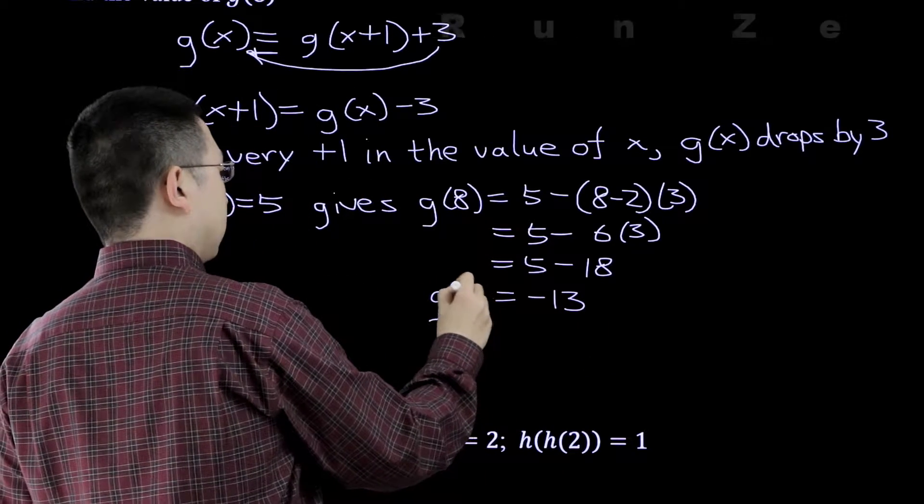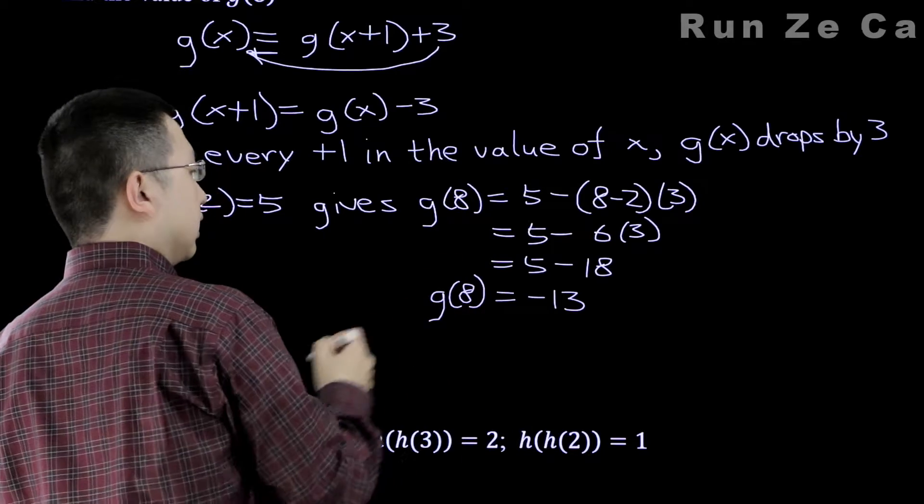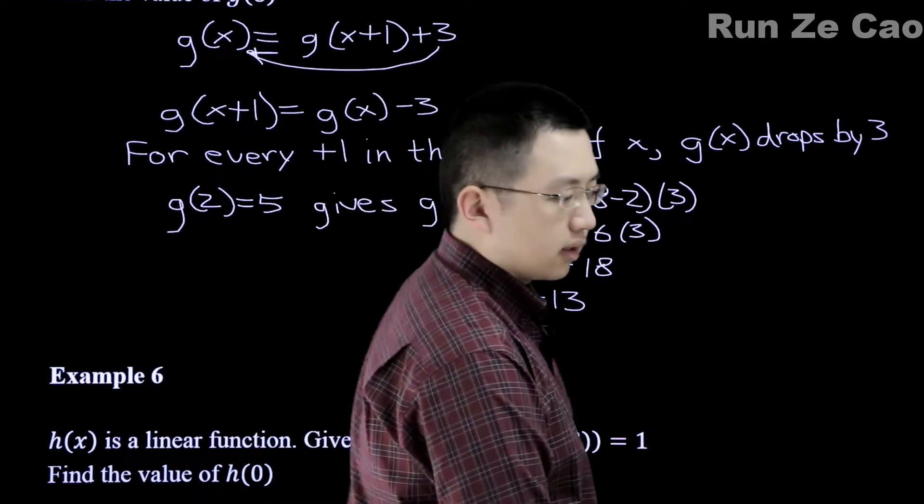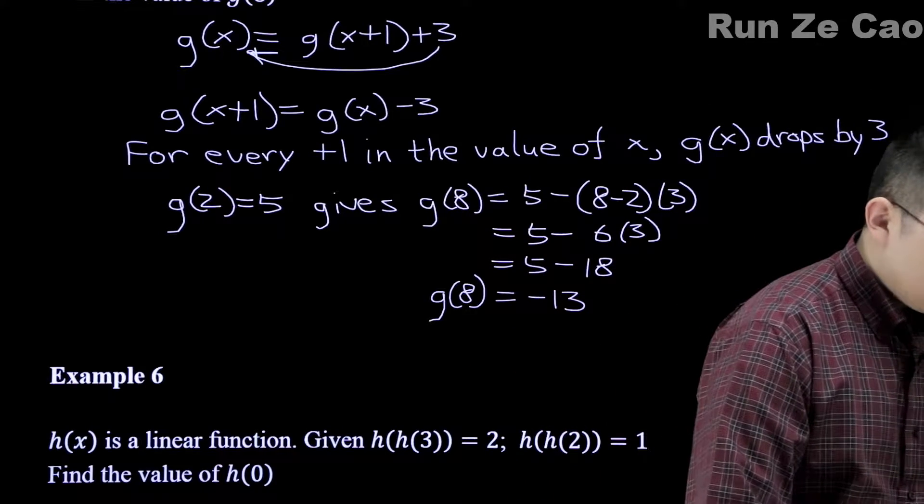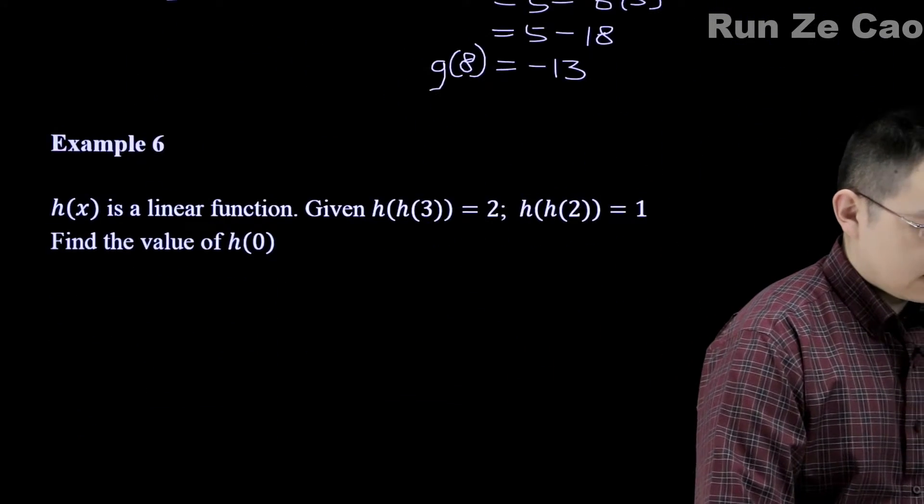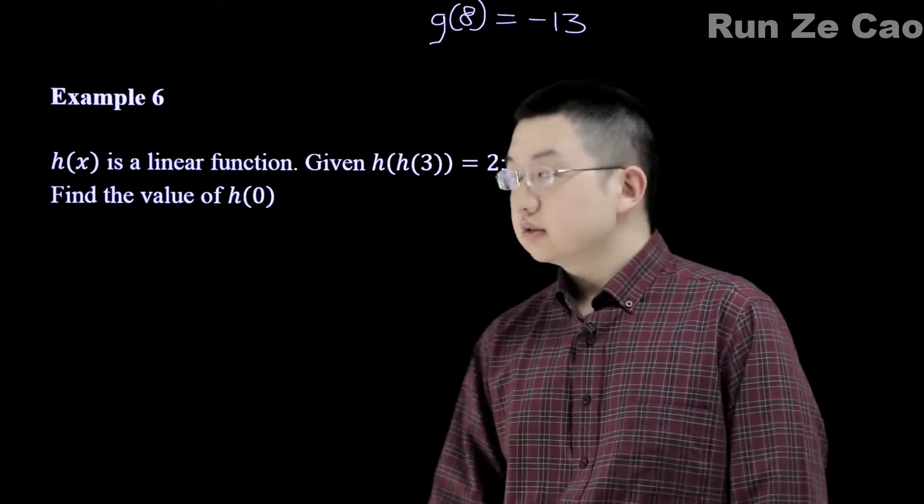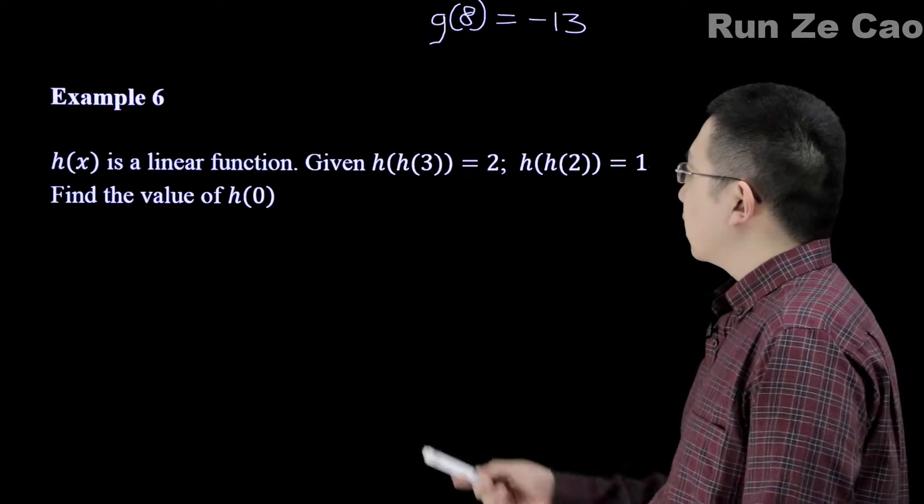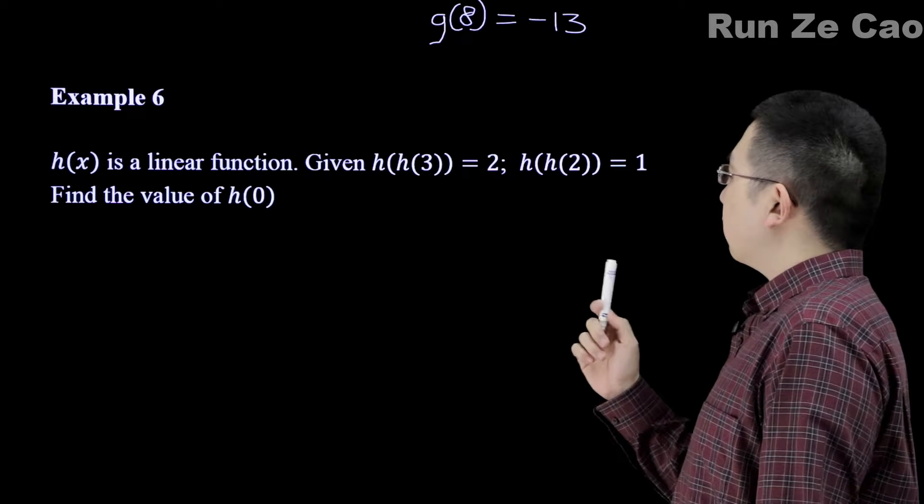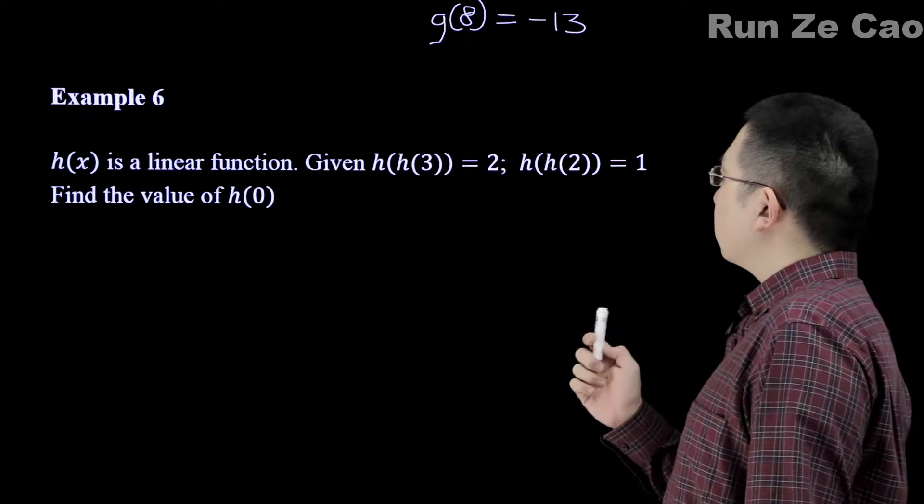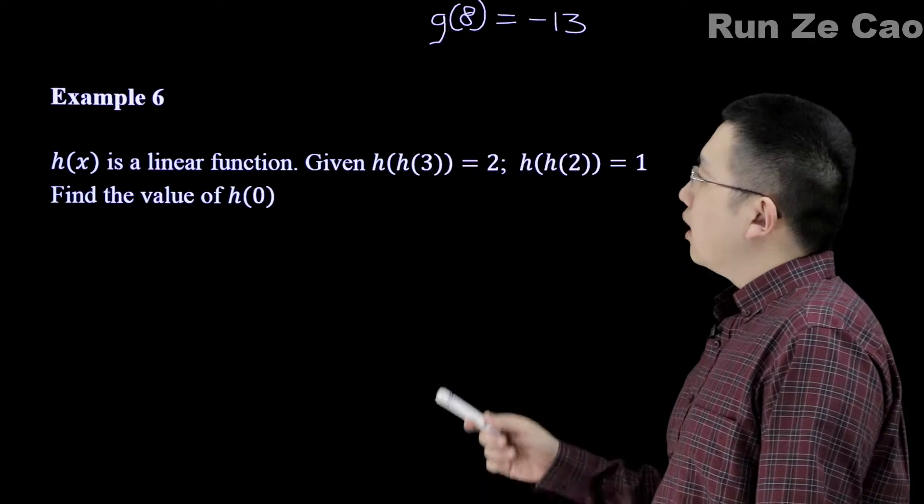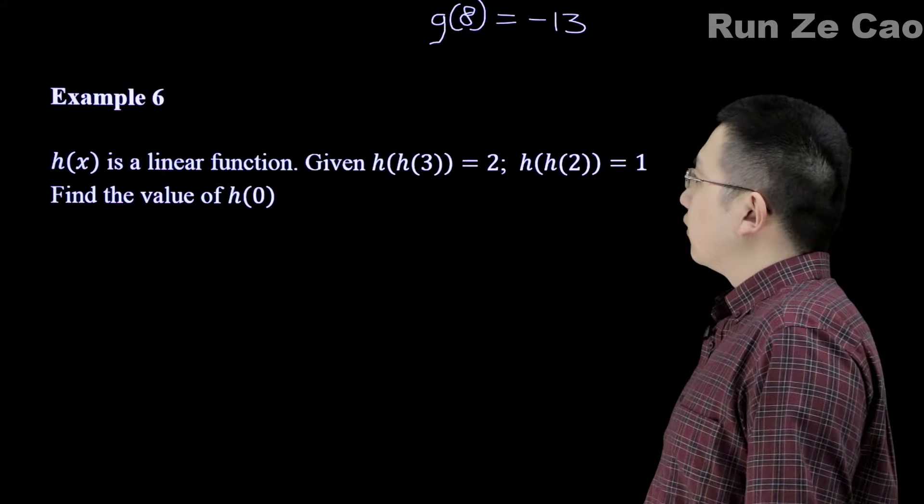Some teachers prefer if you write what you're actually finding here. So we have found the value of g(8). So a slightly harder than average problem here. We have h(x) is a linear function. Given h(h(3)) is equal to 2, h(h(2)) is equal to 1, find the value of h(0).